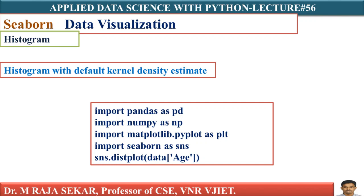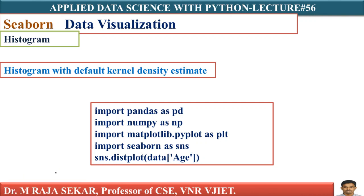The input to this plot is a data frame and a variable name. Here, data is the data frame name and age is the column name in our data frame from the file toyota.csv, which we have been working on for the last few lectures. For a histogram, the input should be any numerical or continuous variable, and age is indeed a numerical, continuous variable.